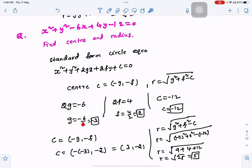We compare the standard formula. The g value is minus 3. So 2g is equal to minus 6. So g is minus 3.